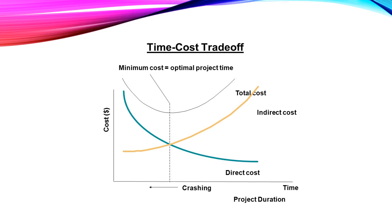Here is a graph showing the time-cost trade-off. The minimum cost equals the optimal project time. Along the x-axis, the crashing time or project duration reduction is represented, and along the y-axis, the cost is represented. We can plot the total cost curve, the indirect cost curve, and the direct cost curve. In the time-cost trade-off concept, the total cost is increasing.